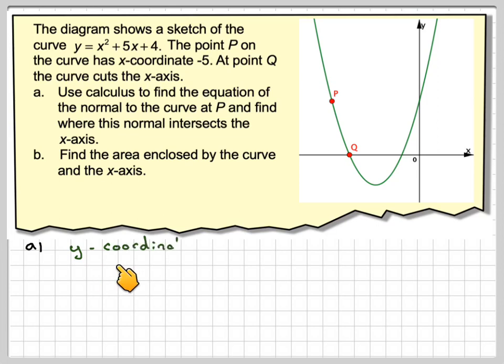If we want to find the y-coordinate of P, then we put minus 5 into this. So we're going to get minus 5 squared plus 5 times minus 5 plus 4. If we work that out, it's going to give me 4.